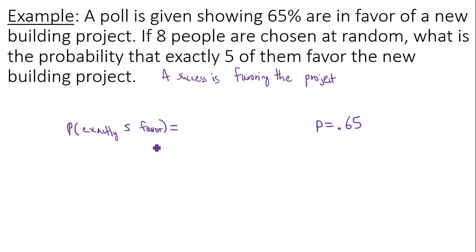So I'm going to calculate my probability in Google Sheets of exactly five, but I need to know the total number of trials, which is eight, probability of a success. Then I need a lower and upper bound. This is the range of successes I'm looking at. I'm looking at only exactly five. So the lower bound and upper bound both need to be five.